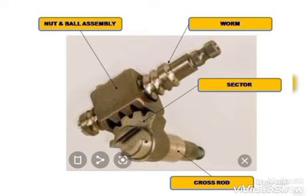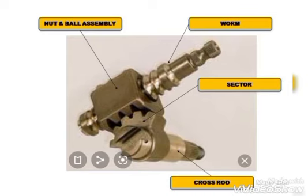The balls move within the nut and ball assembly and recirculate through the curved path — the balls won't come out of the nut and ball assembly. The sector contacts the nut via teeth, and you can see the teeth of the nut and the teeth of the sector meshing together in the machinery.